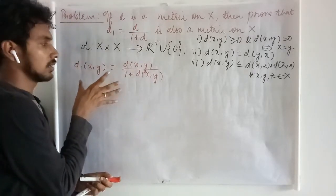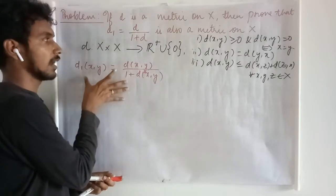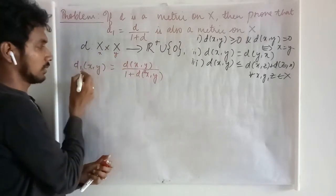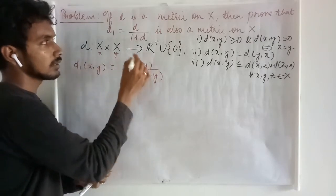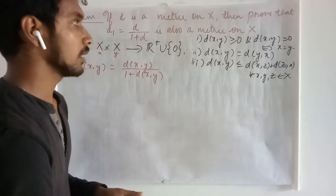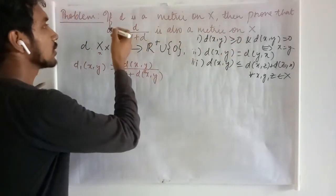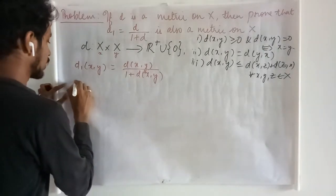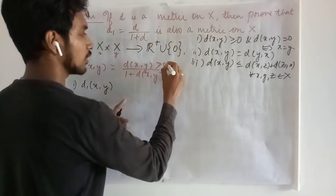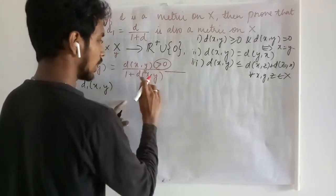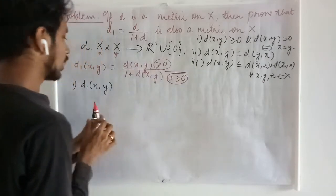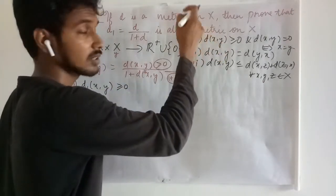First of all, let us verify that this is a valid mapping on X cross X, because the two entries depend on the entries applied in the mapping D, so this is a valid one. Now let us check the other properties to say D1 is a metric. We can see that the numerator is a non-negative quantity, and in the denominator we have a non-negative quantity added with 1. Therefore, it is going to be a non-negative quantity, and the first half of the first condition is verified.